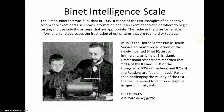This type of testing reduces the time needed by the interviewer and the child, and also decreases the frustration of using items that are too hard or too easy. In 1913, the United States Public Health Service administered a version of the test to immigrants arriving at Ellis Island. These professional researchers were studying eugenics and had a reason to decide how intelligent the immigrants were. However, their results concluded that most of the Italians, Hungarians, Jews, and Russians were feeble-minded. Rather than challenging the validity of using the test in this manner, these results served to reinforce negative images of immigrants.